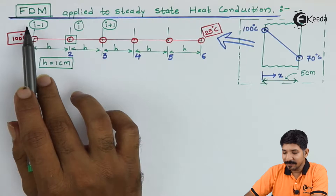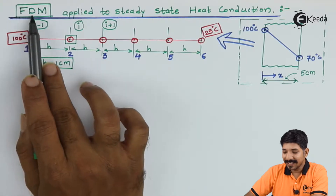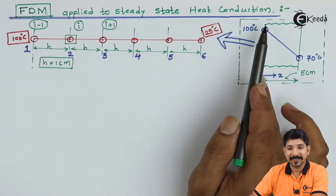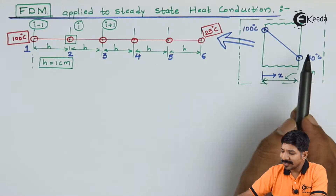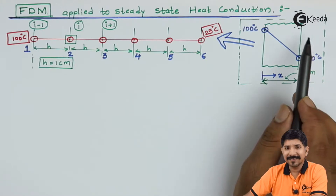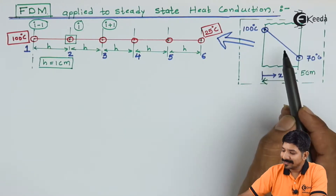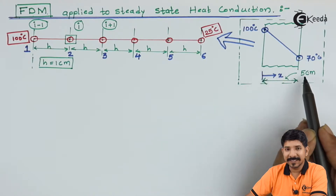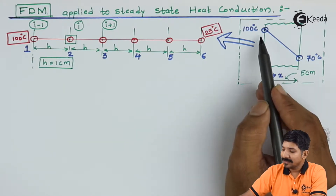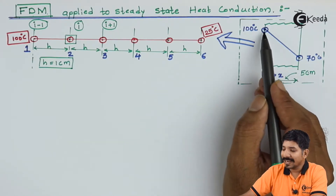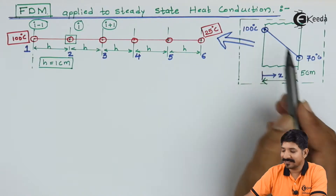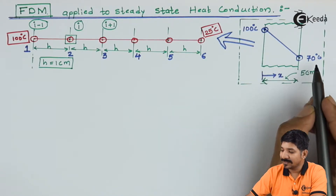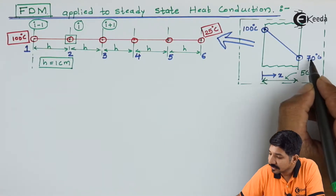Let us apply the FDM method, that is the finite difference method, to the steady state heat conduction equation. For that, let us consider a simple scenario: a slab of 5 cm thickness, where the temperature at one side is 100 degree Celsius and at the other side the temperature is 25 degree Celsius.